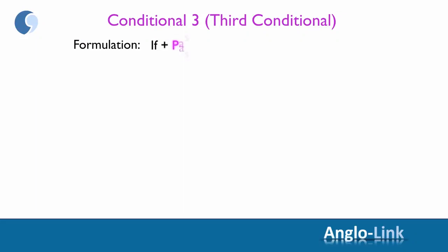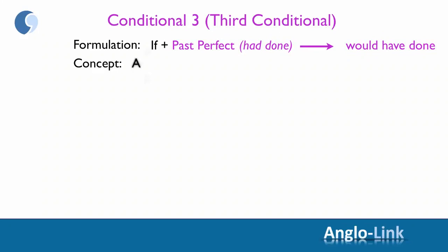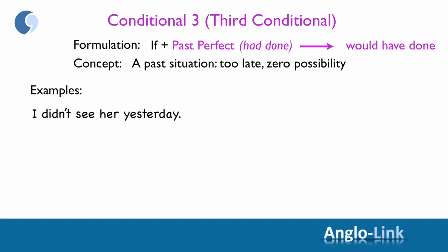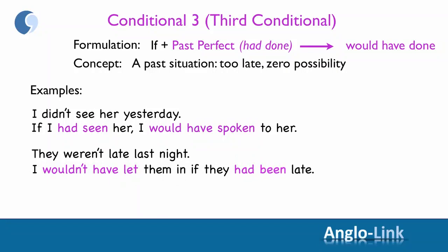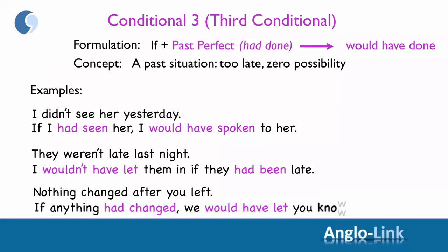Moving on to conditional three, or the third conditional. The formulation is: if plus past perfect, would have done. The concept is very clear: a past situation — it's too late to change anything, there is zero possibility. Examples: 'I didn't see her yesterday. If I had seen her, I would have spoken to her.' 'They weren't late last night. I wouldn't have let them in if they had been late.' 'Nothing changed after you left. If anything had changed, we would have let you know.'